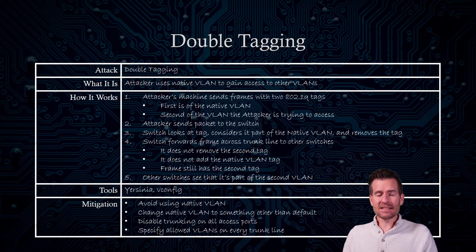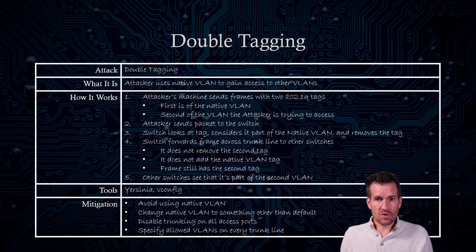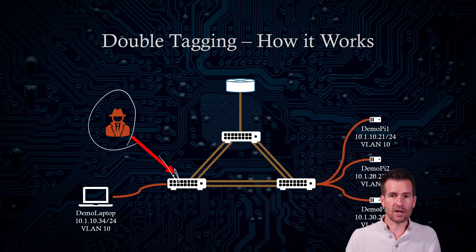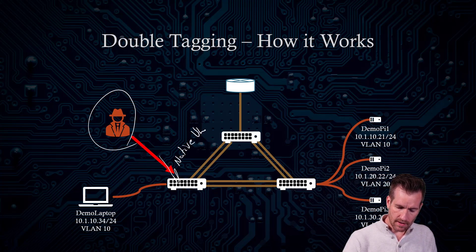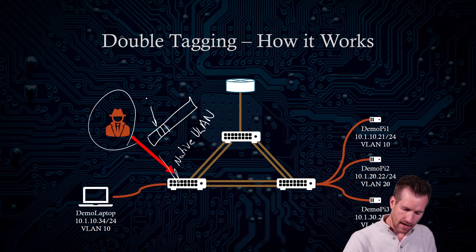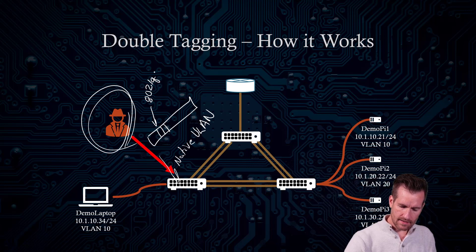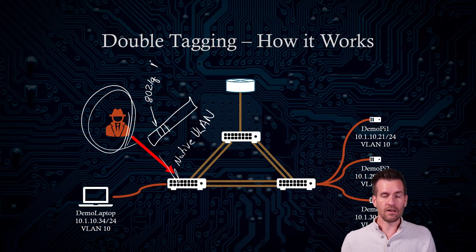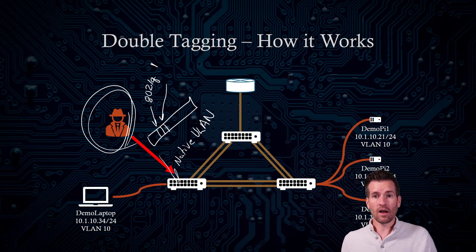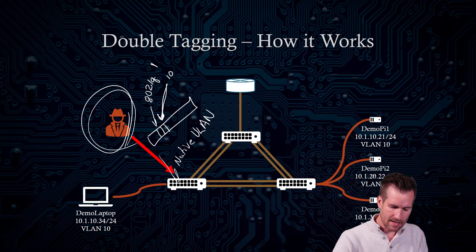But an attacker doesn't necessarily need to have a trunk line established with a switch to VLAN hop. The other way an attacker can do this is if they are on a native VLAN, they can do what's called double tagging to access another network. For this to work, the attacker needs to be connected to a port on the switch that is part of the native VLAN. They send a frame with 802.1Q tagging — the first tag being the native VLAN (VLAN 1 by default), and a second tag for another VLAN, say VLAN 10.